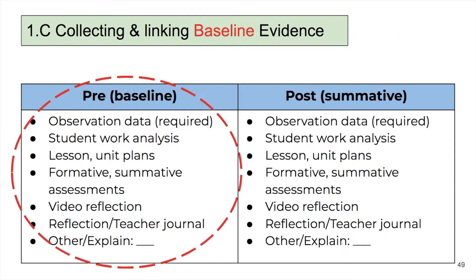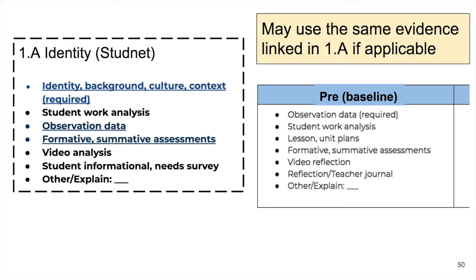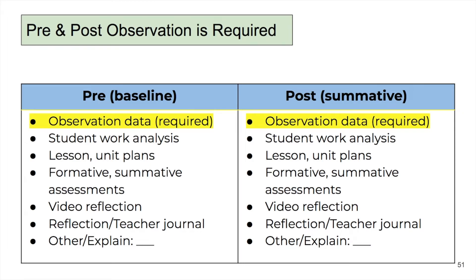You want to collect evidence at the beginning of the cycle, which will act as a baseline. This is labeled pre or baseline. You may have linked the same evidence in 1a, in which case you may link the same ones in 1c if applicable — in other words, it's okay to double dip. A baseline observation and a summative observation are required, even if it might not be the best evidence for the goal; it is still required.